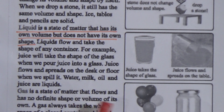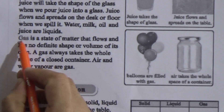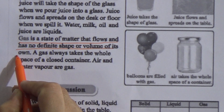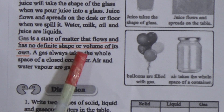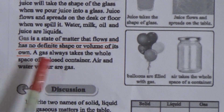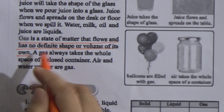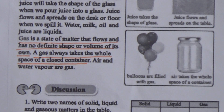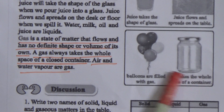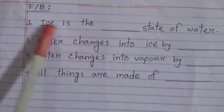Gas is a state of matter that flows and has no definite shape or volume of its own. Memorize this line. A gas always takes the whole space of a closed container. Air and water vapor are examples of gases.